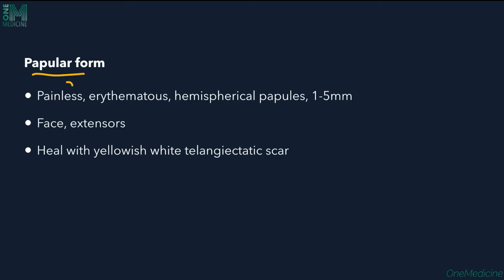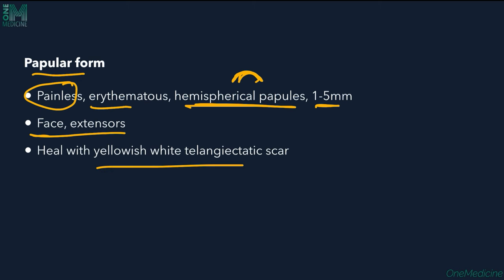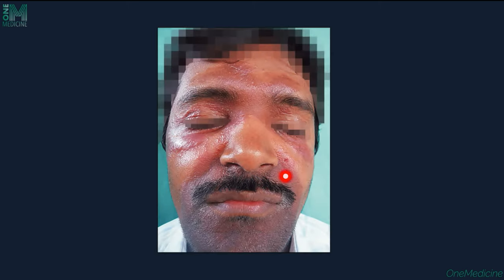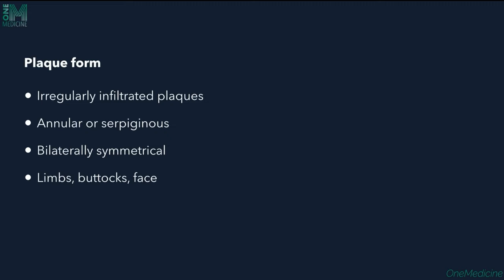The papular form shows painless erythematous hemispherical papules around 1 to 5 mm, involving the face and extensors of the limbs, healing with an ateleangiectic scar. These individual papules join together to form a plaque, seen on the nose and eyebrows.